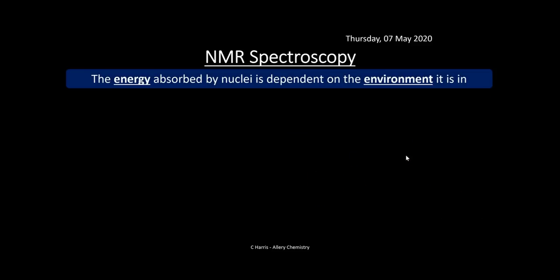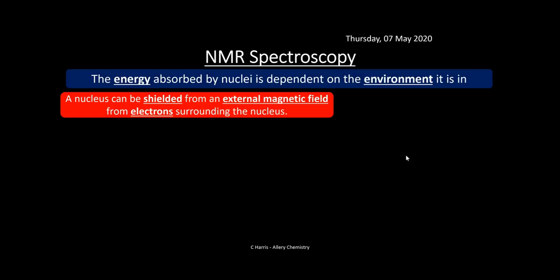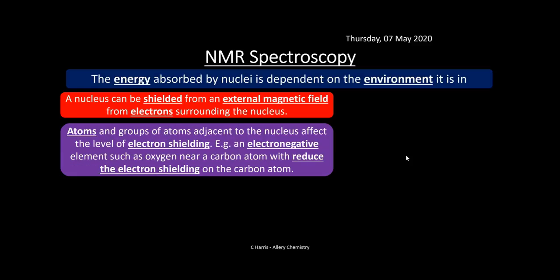The energy absorbed by the nuclei is dependent upon the environment they're in. That gap between the lower energy and higher energy nucleons — the size of that gap depends on what environment those nucleons are in: are they near another atom, completely isolated, or near five atoms? A nucleus can be shielded from the external magnetic field by electrons surrounding it. It's a bit like going down a rocky hill cocooned in bubble wrap — the more bubble wrap you have, the more protected you are from bumps and knocks.